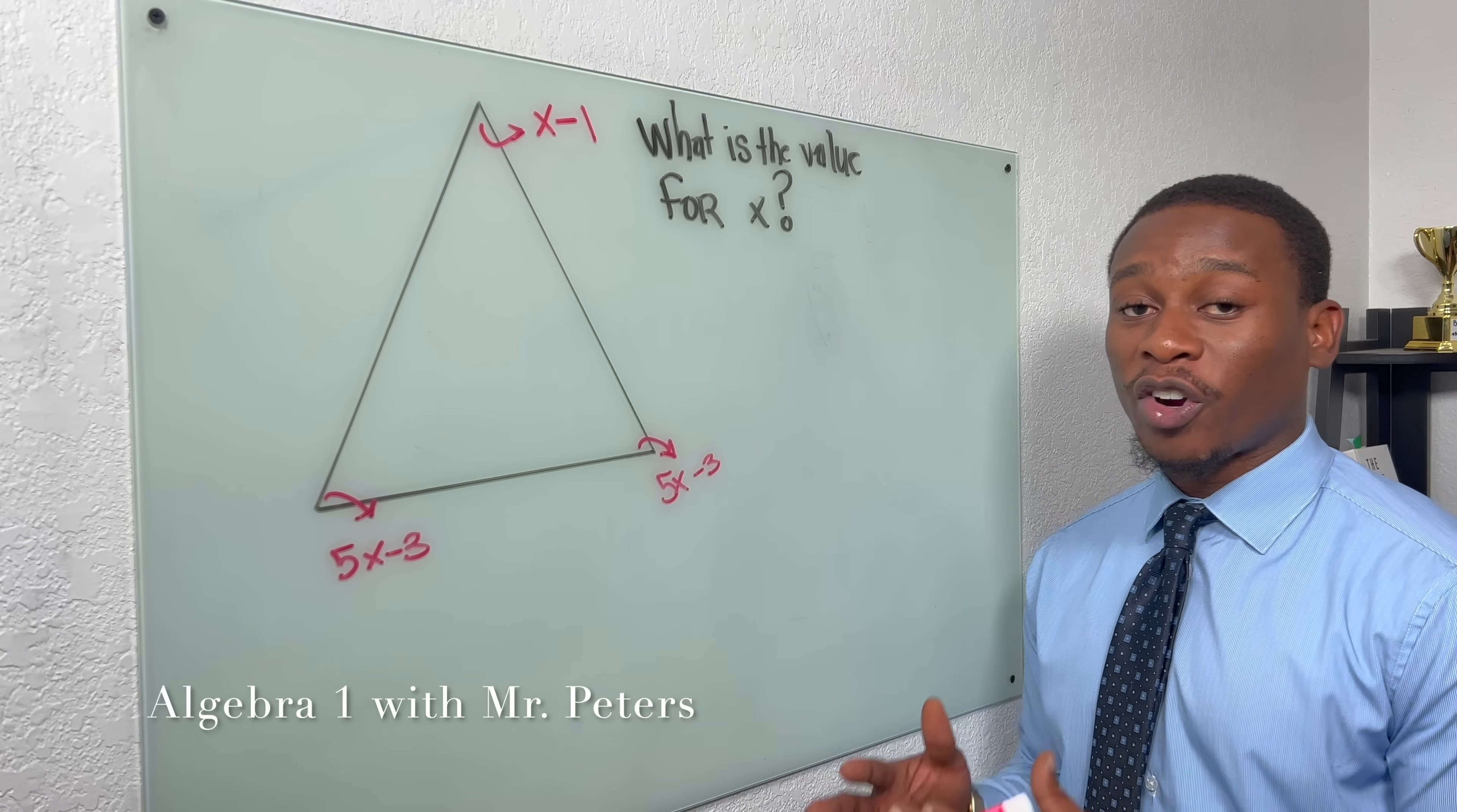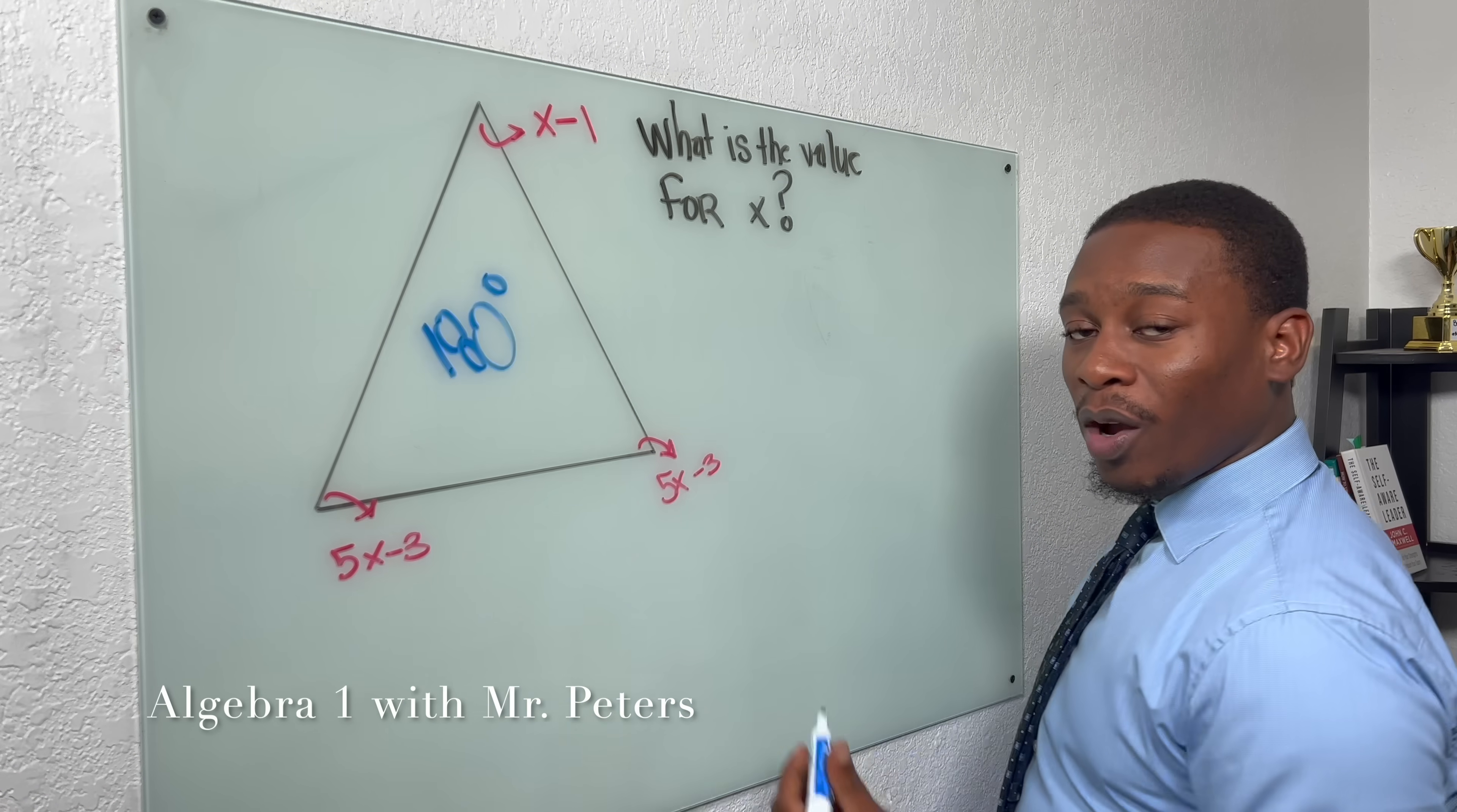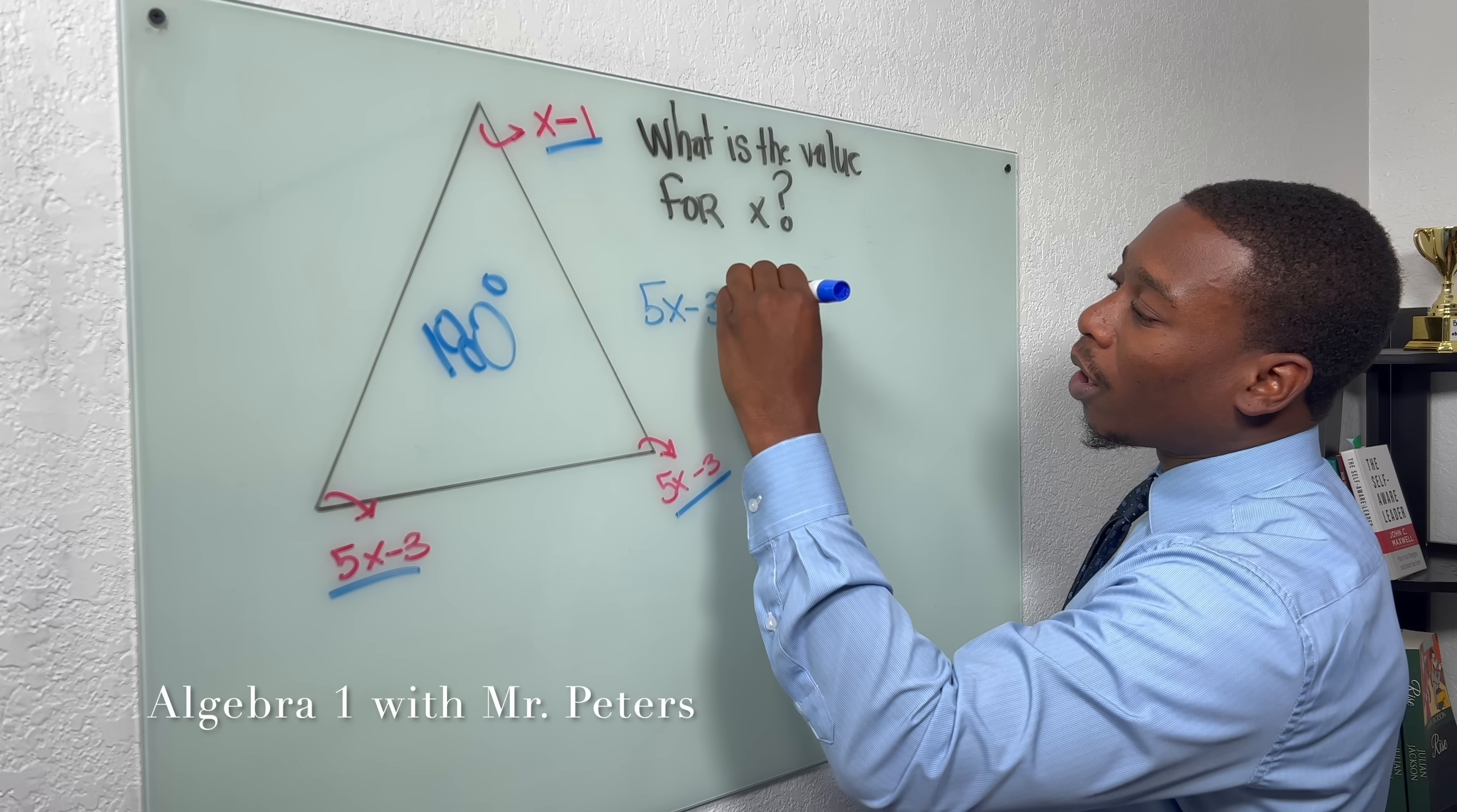Now we're dealing with triangles and trying to find the angles associated with it. So first rule we have to understand is how many degrees are in a triangle. And we are exactly correct. It's going to be 180 degrees. Now that we know that, guys, we are just going to create an equation and solve. So to create this equation, we're going to add all three of these angles, and it's going to equal 180 degrees.